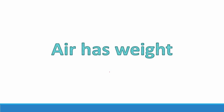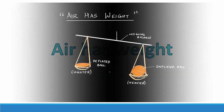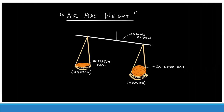The next property of air is that air has weight. We will prove it with a simple experiment. We take a weighing balance and two different balls — one is a deflated ball and one is an inflated ball. A deflated ball does not have any air inside it, so it is an empty ball, whereas an inflated ball is filled with air. When we keep these on a weighing balance, the balance tilts towards the ball which is filled with air. With this experiment we can easily prove that air has weight.